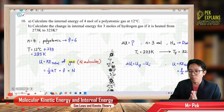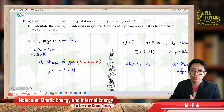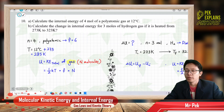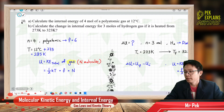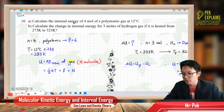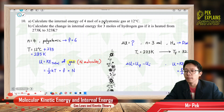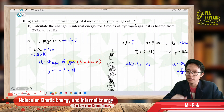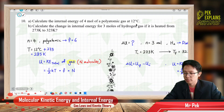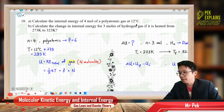Hi, welcome to the last question in the tutorial. Question 10, part 10a: Calculate the internal energy of 4 moles of a polyatomic gas at 12 degrees Celsius.